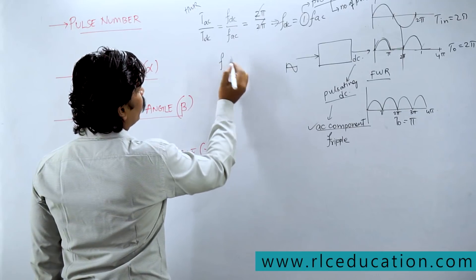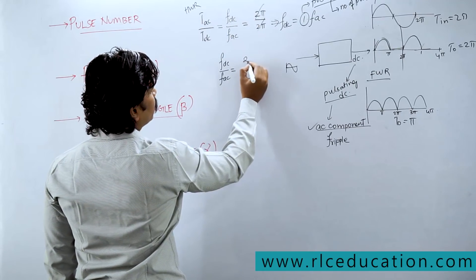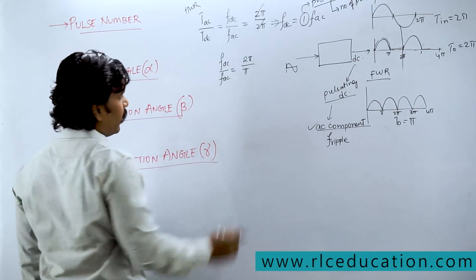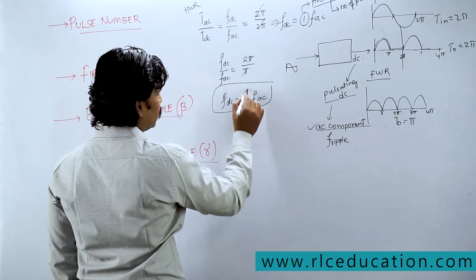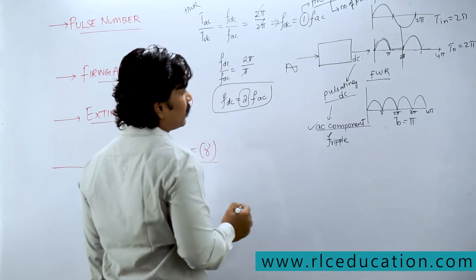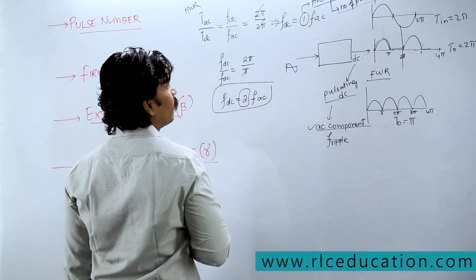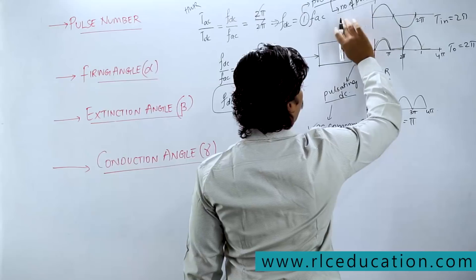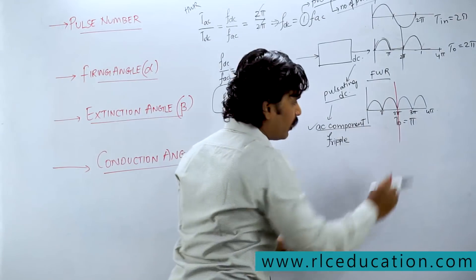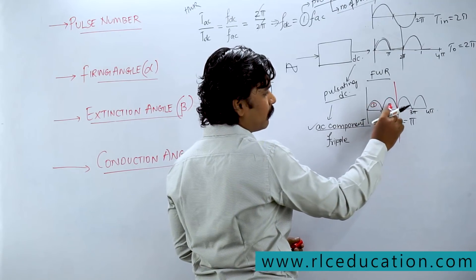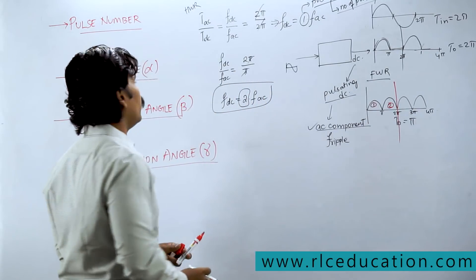Firing angle (α): consider a thyristor (SCR) connected to a resistive load with a sinusoidal input voltage. During the positive half cycle, the SCR is forward biased. However, it will not conduct until you apply a gate pulse I_G. Until the gate pulse is applied, the output voltage remains zero. The angle at which you supply the gate current pulse is called the firing angle α. Once α is applied, the output follows the input instantaneous voltage, which at that moment equals V_m sin α.